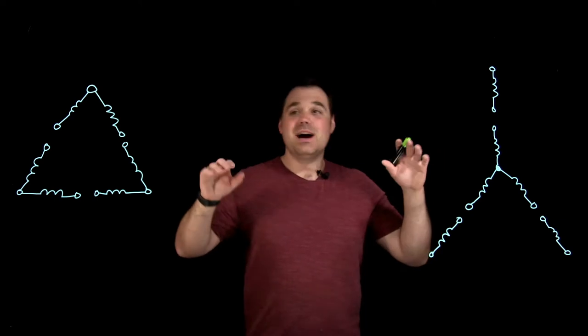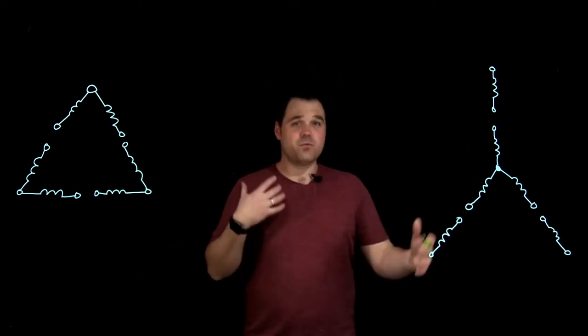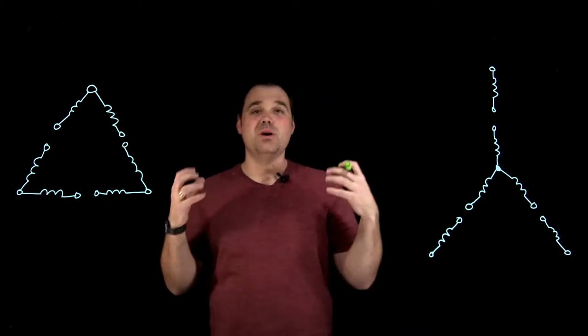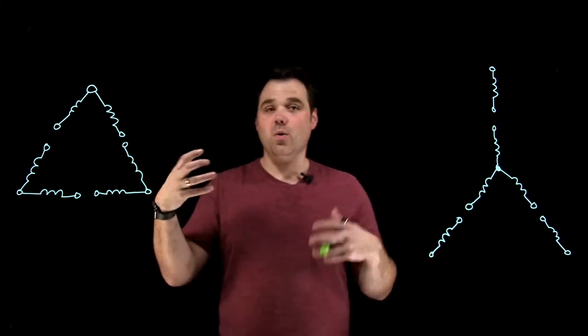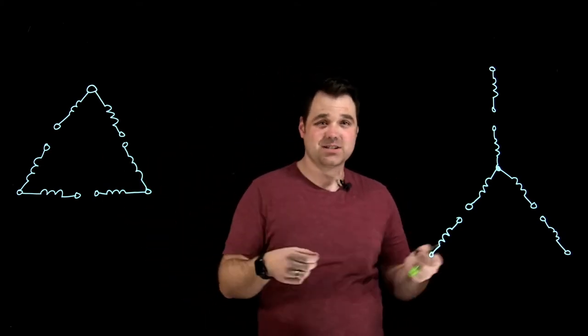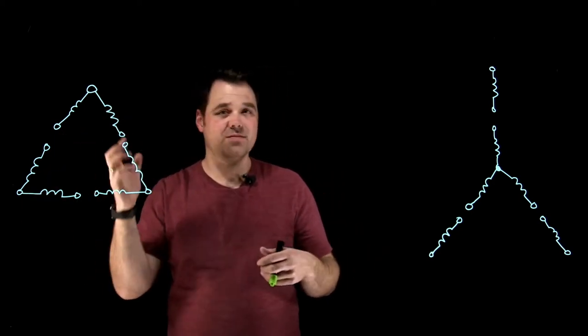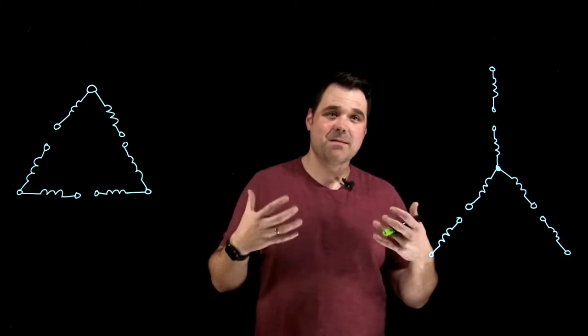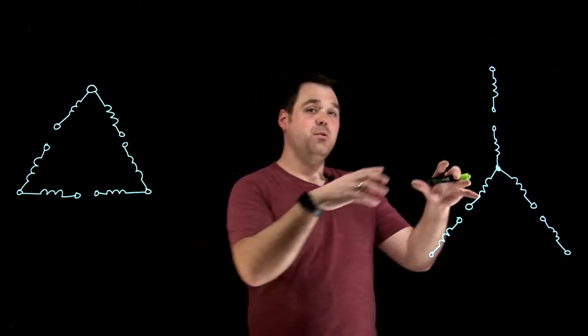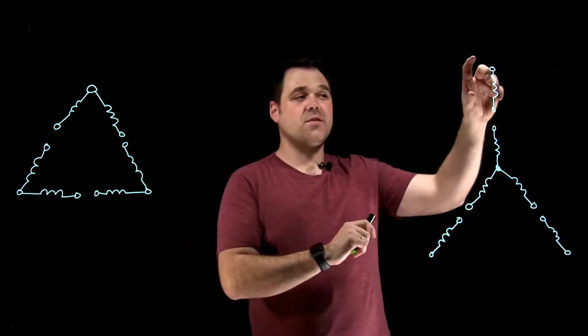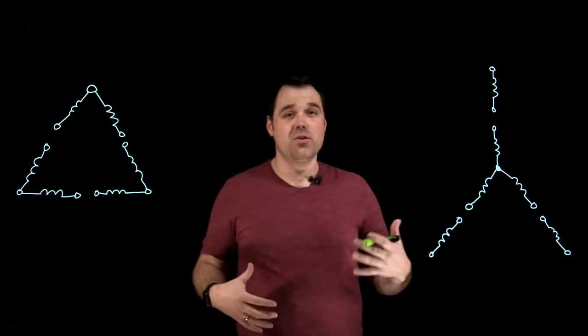But here we've got a nine lead delta and a nine lead Y motor. Our first step is we want to identify whether we're a delta or whether we're Y. So in a delta motor, I'm going to take out my continuity tester, my ohm meter, and I'm going to identify three groups of three points. So I've got nine leads, nine conductors hanging out of that motor junction box. And I'm going to identify three groups of three. With my Y motor, I'm going to identify three groups of two and one group of three. But let's break this down and go through all the steps.